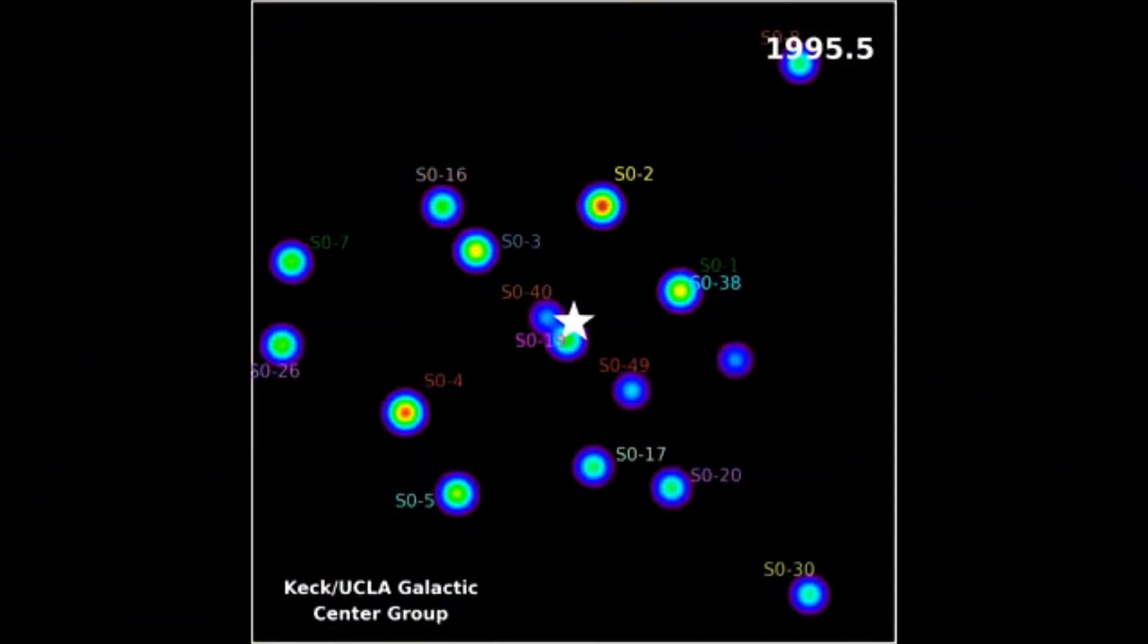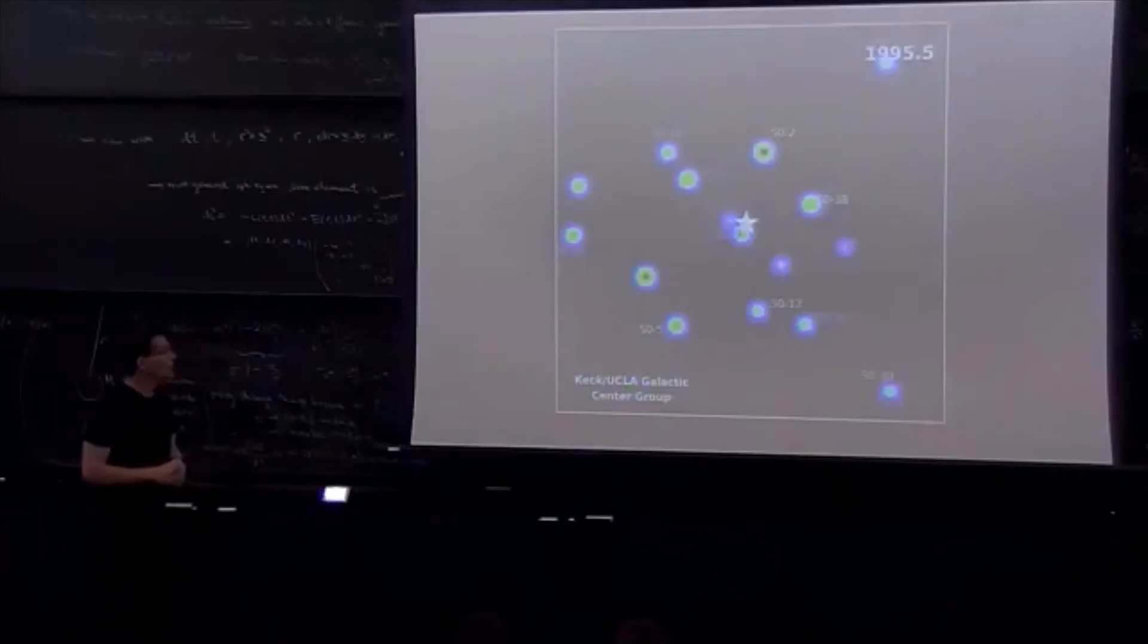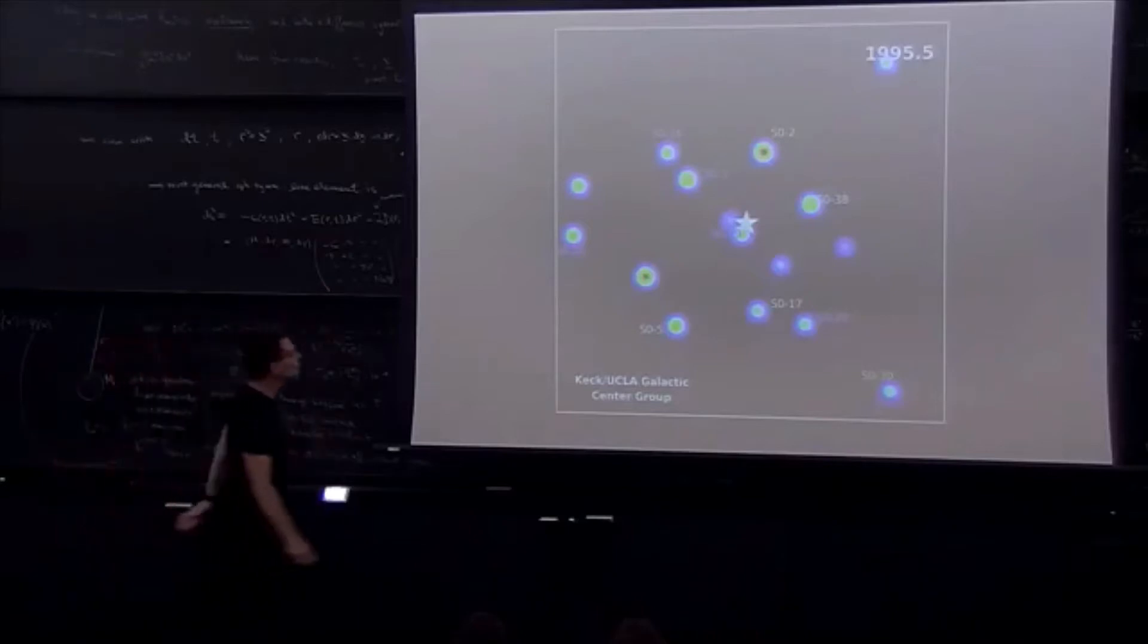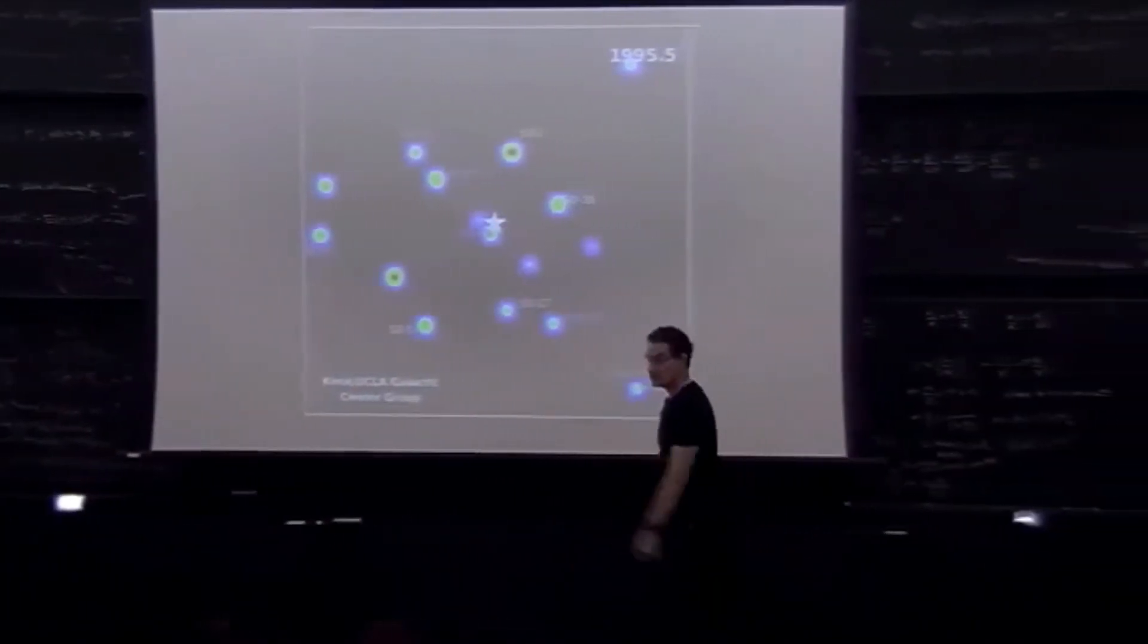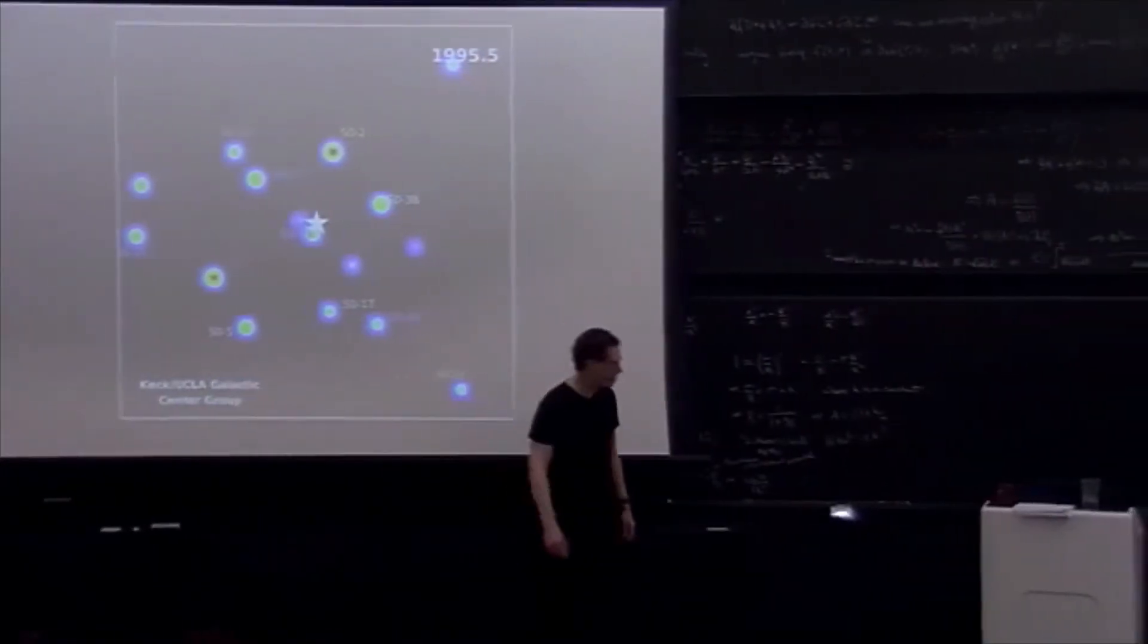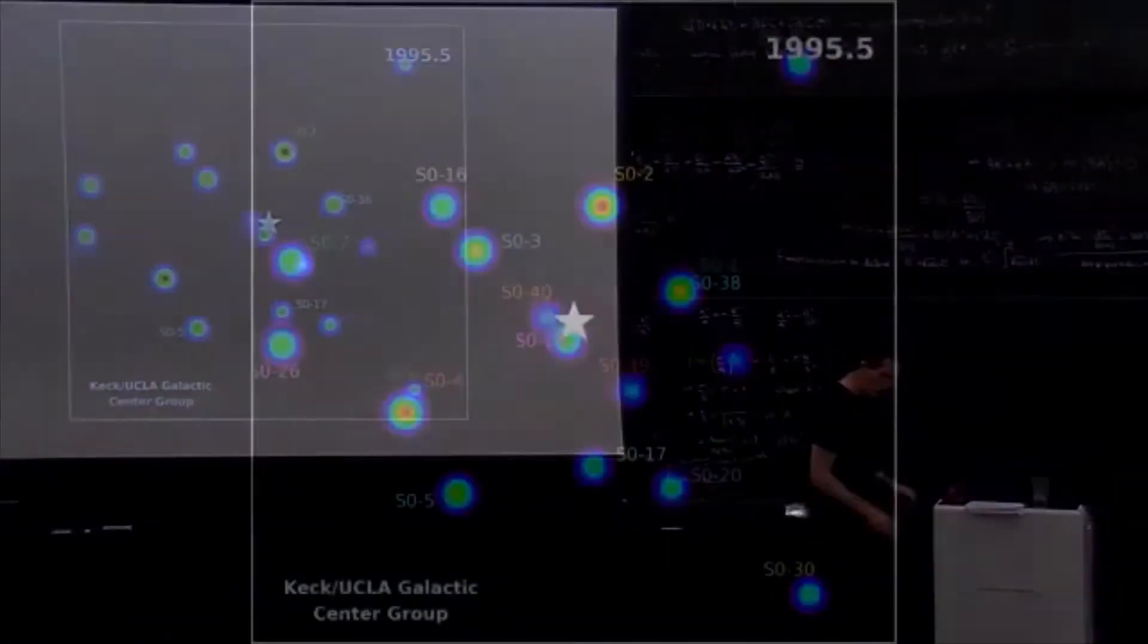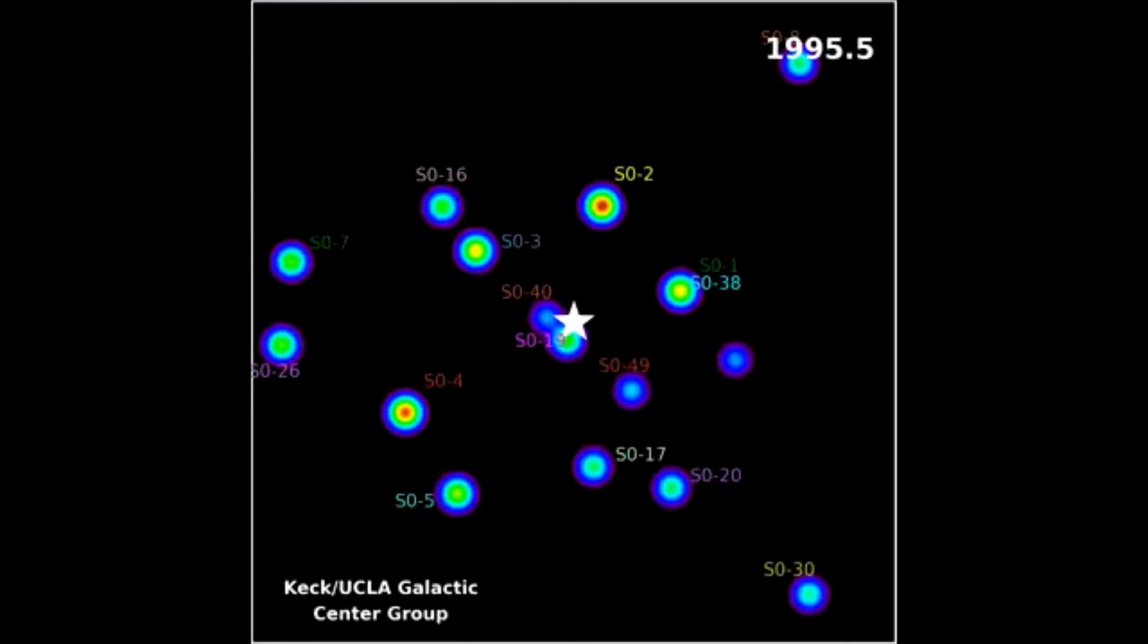And only recently, starting in the 1990s, using the Keck telescope in Hawaii, which is one of the most powerful optical telescopes, people were able to start watching the stars in the very middle of the galaxy. The movie will show you the orbits of all these stars as they're actually seen. The person who leads this work, her name is Andrea Ghez.